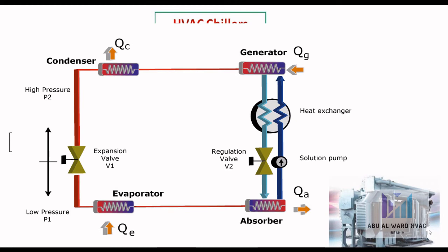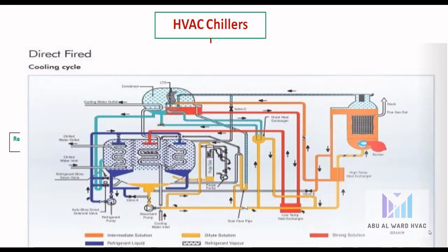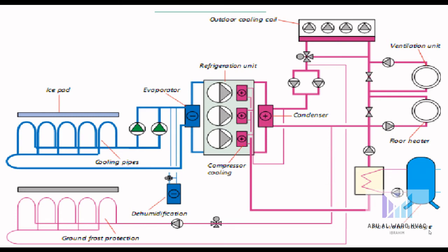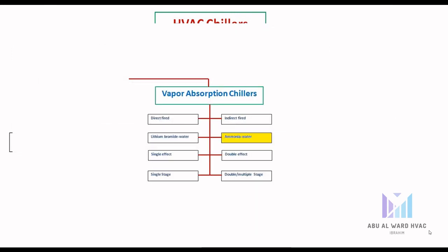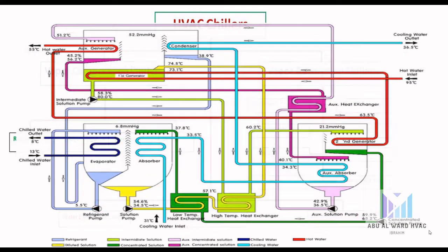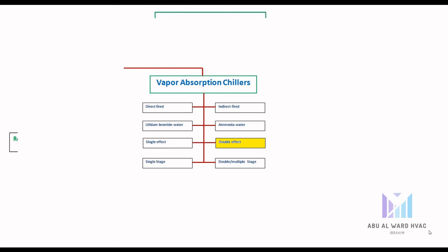Vapor absorption chillers: the circuit mainly consists of four main components — absorber, generator, condenser, and evaporator. Subtypes include direct fired, indirect fired, lithium bromide-water, ammonia-water, single effect, double effect, and single or multiple stage configurations.